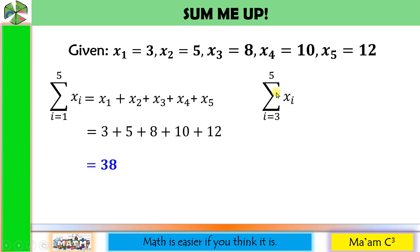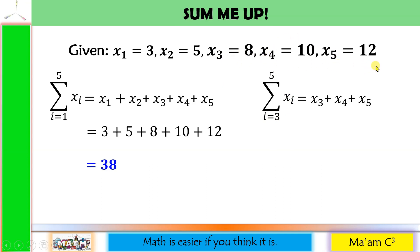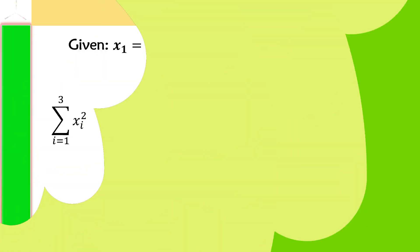Let's have another example. This is read as the summation of X sub I, I going from 3 to 5. So we are going to start with X sub 3, then add X sub 4, and then X sub 5. Substituting the values: 8 plus 10 is 18, and 18 plus 12 is equal to 30.